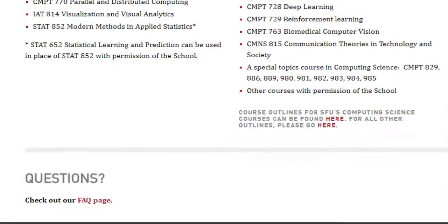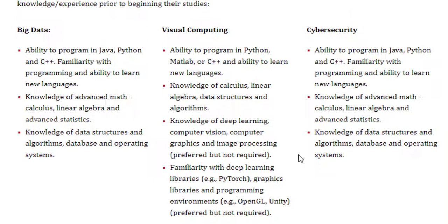For admission requirements, all three domains have different requirements. For Big Data, you need the ability to program in Java, Python, and C++, and you should have the ability to learn new languages — there is a possibility they may introduce MATLAB during the course. You also need knowledge of calculus, linear algebra, advanced statistics, data structures and algorithms, databases, and operating systems.